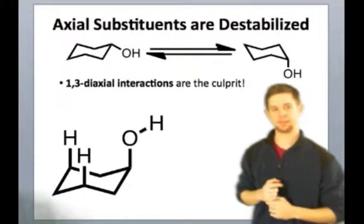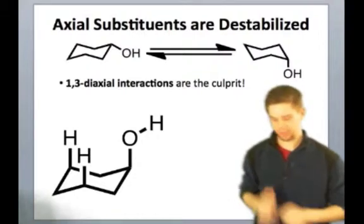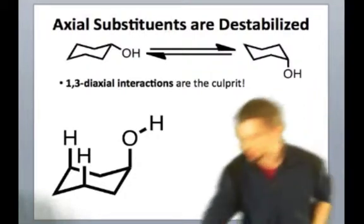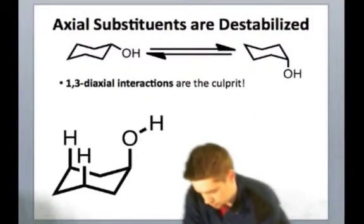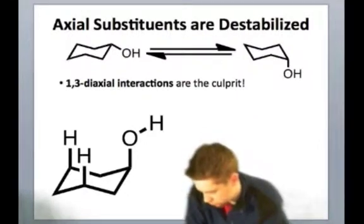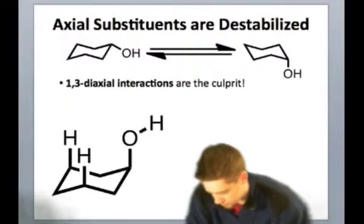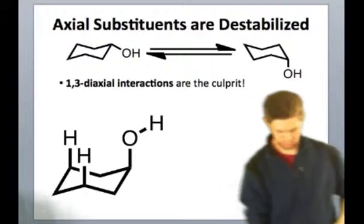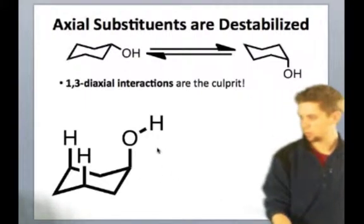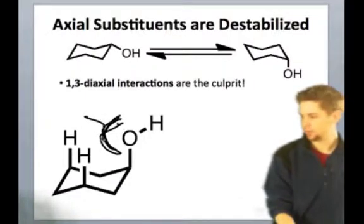Because those are two carbons away at the three position relative to the substituent, we call those destabilizing interactions one-three-diaxial interactions. And actually, to draw these out for you in a little bit more explicit form, what we can see is that the oxygen here can bump into the hydrogens.